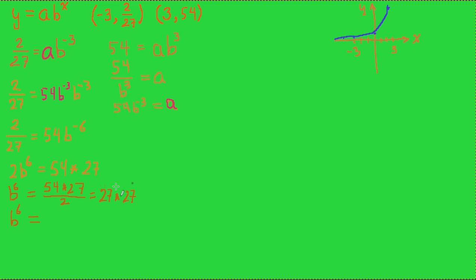Because 27 is 3 to the third power, this is 3 to the third power times 3 to the third power. So b to the sixth is equal to 3 to the sixth power. Whoever made up this problem was trying to make it really easy for us because now it's easy to find the sixth root of both sides, and b is going to have to be equal to 3.